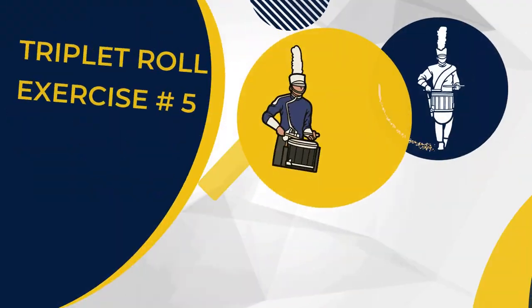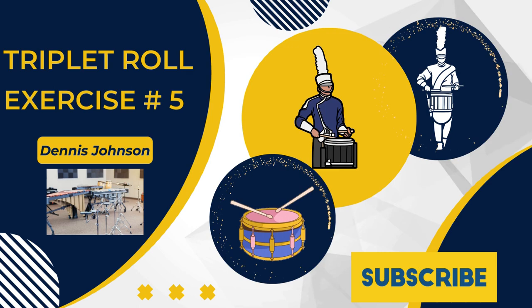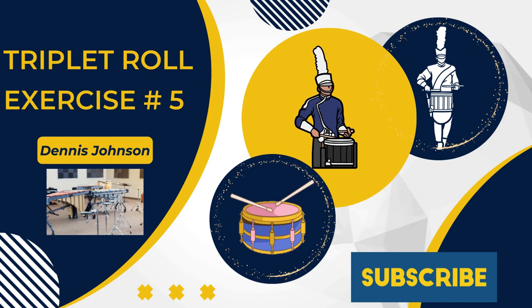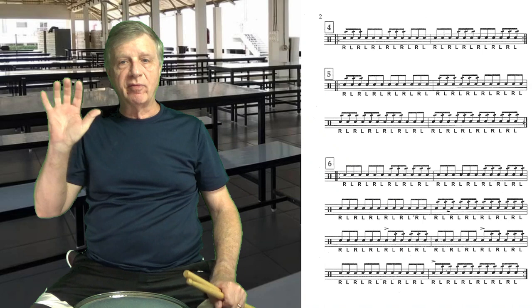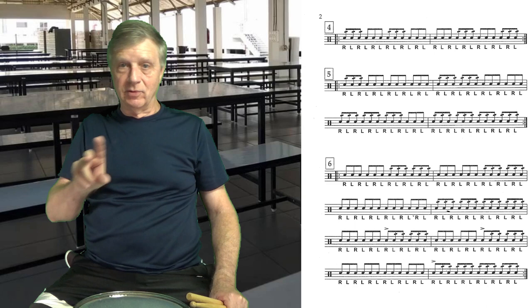All right, triplet rolls, page number two, exercise number five: one counter roll, two counts, three counts, four counts.